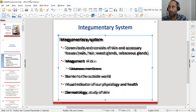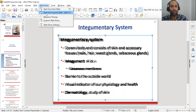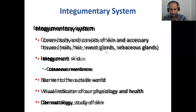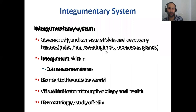Without further delay, let's start with Chapter 6, which has to do with the integumentary system. The word integument itself means a covering, so the integumentary system is your outer covering of the body — your skin and the other associated organs: hair, nails, sebaceous glands, sweat glands, and hair follicles. They all constitute the integumentary system.